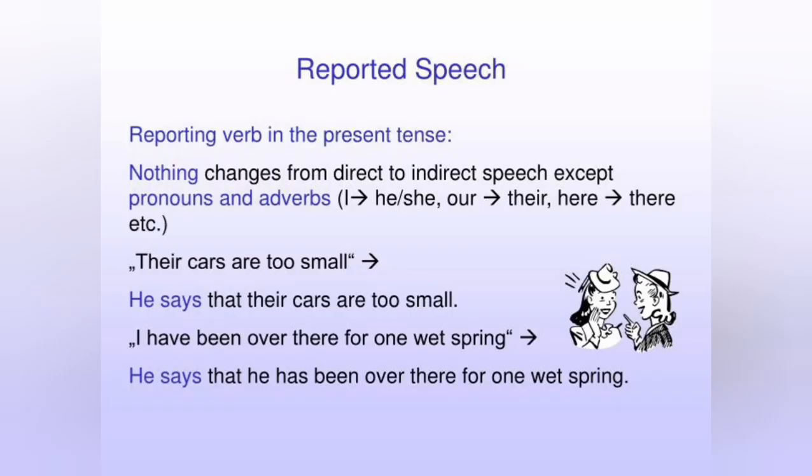The first rule in the reported speech is that we have to look at the reporting verb. If the reporting verb is in the simple present, like 'he says that,' there is no change. So nothing changes from direct to indirect speech except for the pronouns and the adverbs. For example, 'I' will be 'he' or 'she,' and 'our' or 'here' will become 'there.'